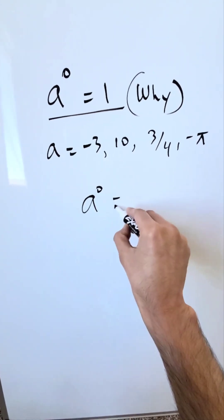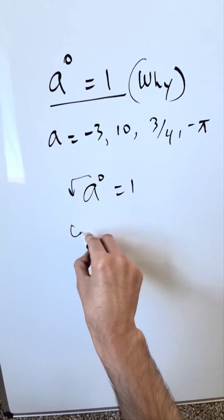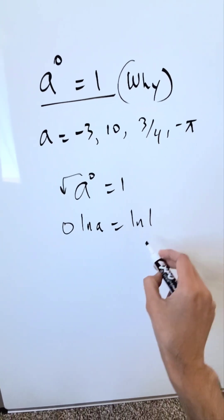Look at that template. We have a to the power of 0 is equal to 1. Bring in your properties of logs. I have 0 natural log a is equal to natural log 1.